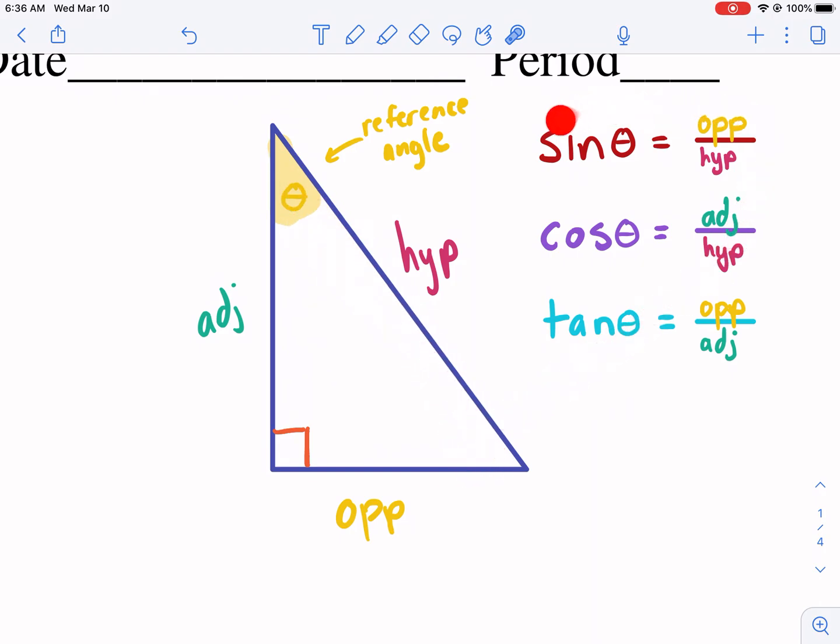So we have our three trigonometric ratios here. We have our sine, abbreviated SIN, cosine, cos, and tangent TAN. And basically this just compares two sides of the triangle.